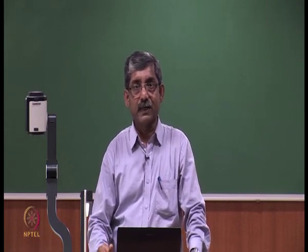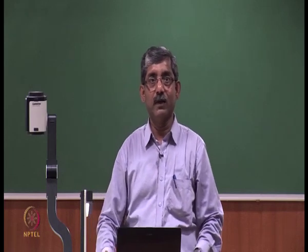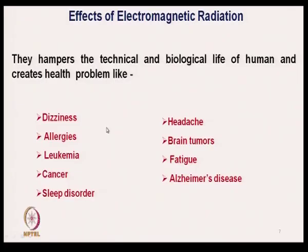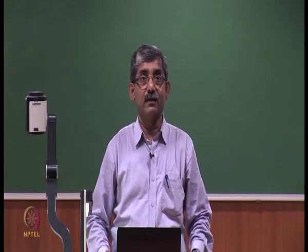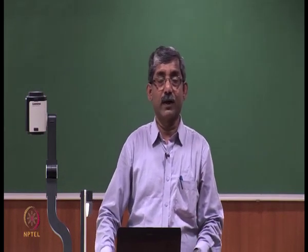This hampers the technical and biological life of humans and creates different types of health problems. The most common health problems due to electromagnetic radiation are dizziness, allergies, even leukemia, cancer, sleep disorder, headache, brain tumours, fatigue, and Alzheimer's disease. These are the different types of problems which may be created due to electromagnetic radiation.